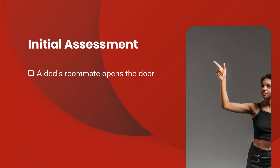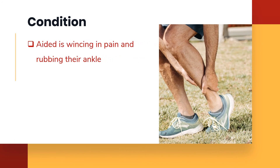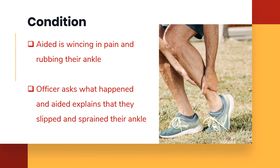Initial Assessment: the aided's roommate opens the door. Post One Officer asks where the person in need of assistance is and is led to the aided. The aided is wincing in pain and rubbing her ankle. After introducing himself as campus safety and asking what happened, the officer is told she slipped in the hallway and sprained her ankle.